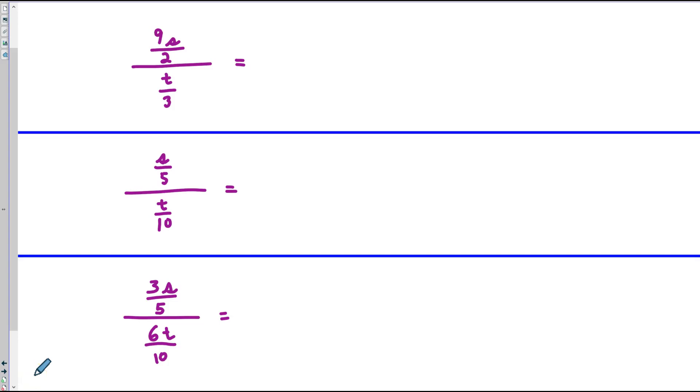Whenever we have a scenario like this, where we've got 9s over t and it's being divided by a fraction, what we do is instead of dividing by the fraction, we multiply by its reciprocal, 3 over t.